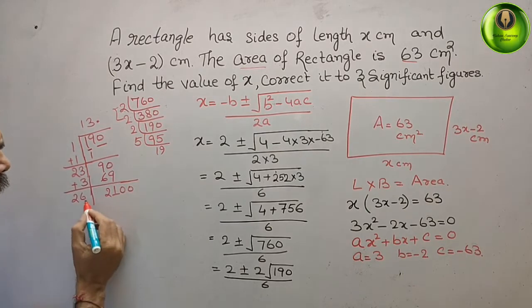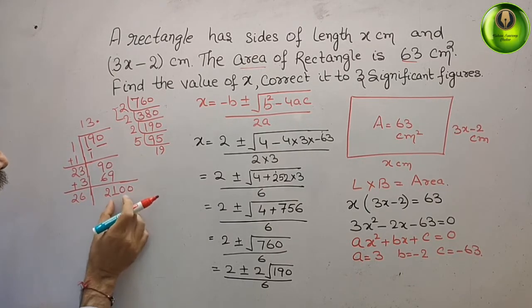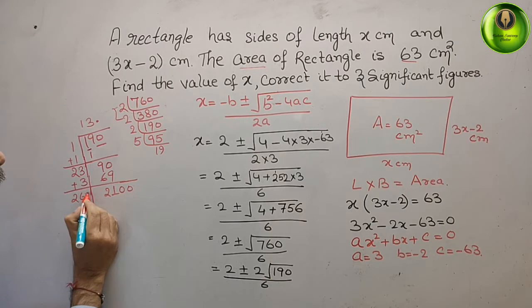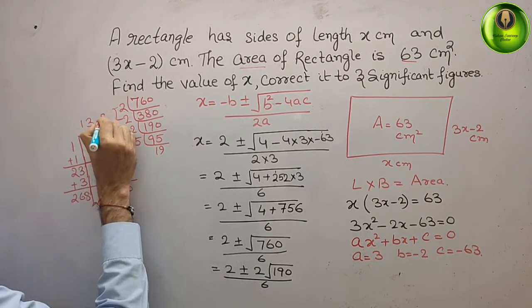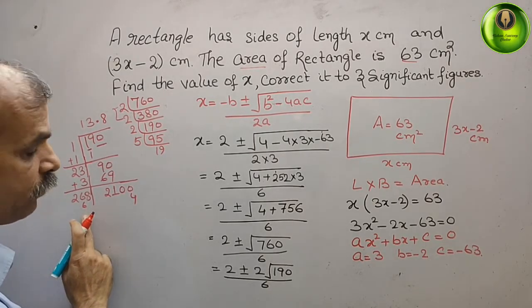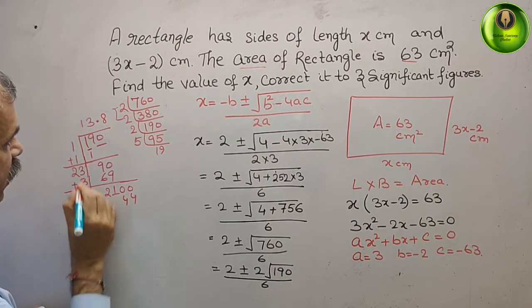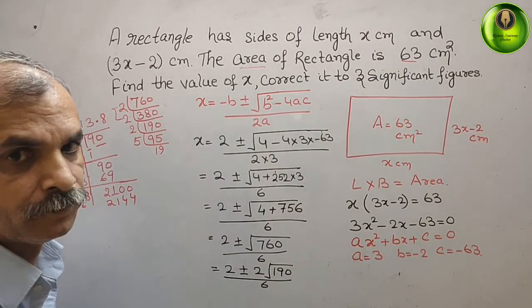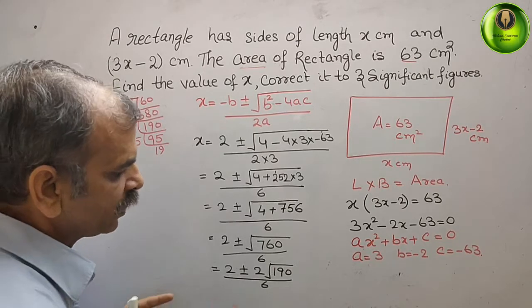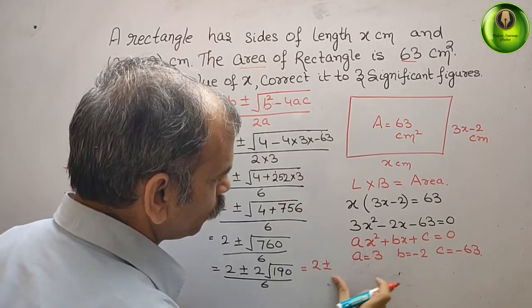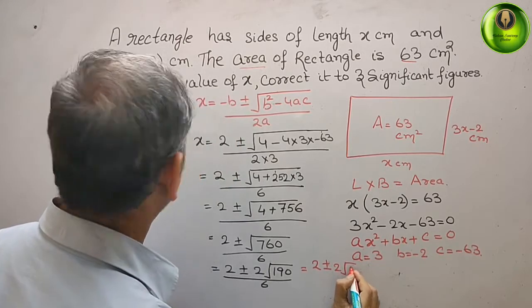Now, that means, it will go at around 6, 7, 8 times. 8 times. So, we will write here, 8. 8 into 8 is 64. 6 carry. 8, 6 of 48. 48 plus 6 is 54. 5 carry. 16, 21. So, now, it will, approximately, it will go 13.8 only. Approximate. So, now, we will write the value of this. That is equal to, we can say, 2 plus and minus 2 root over 13.8. By 6.